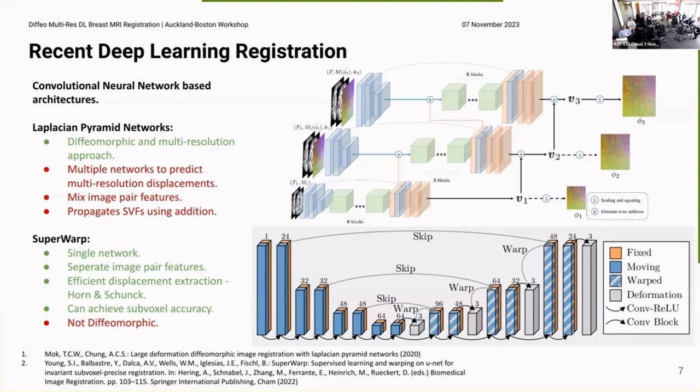So there's been a lot of work in deep learning registration, particularly on the type of architecture used for deep learning registration. All of them are based on, not all of them, but a substantial amount of them are based on convolutional neural networks and a U-Net type architecture. And then very recent work has been integrated multi-resolution techniques into these architectures.